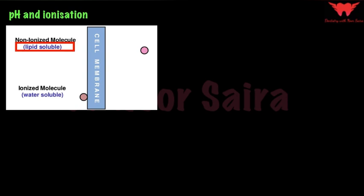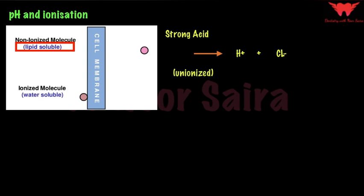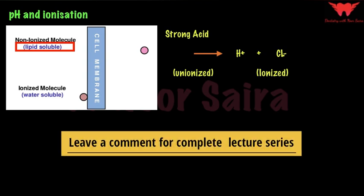Let's understand this step by step. Take a strong acid, for example HCl. When HCl is put into water, it dissociates into H+ ions and Cl- ions. Because it is a strong acid, it will completely ionize — the unionized form of HCl is entirely absent and only the ionized form is present.